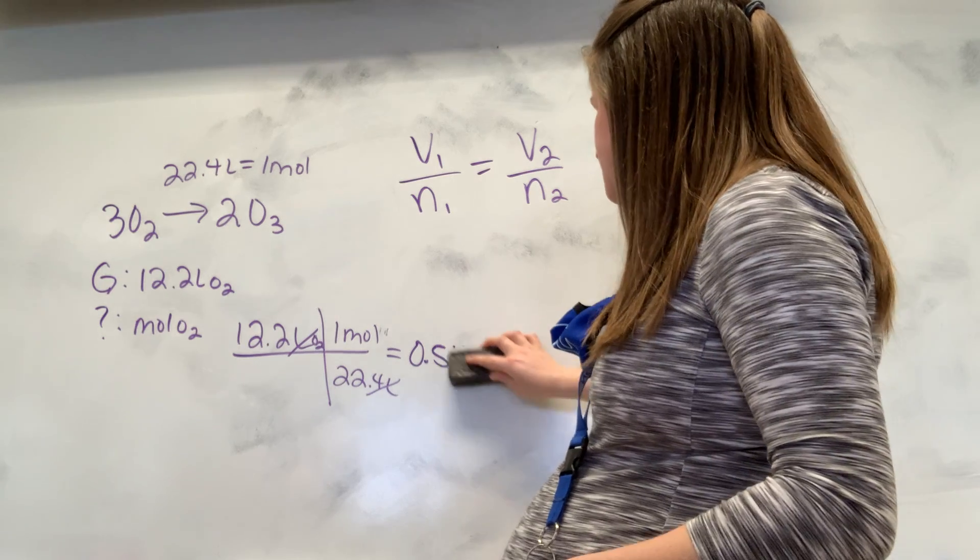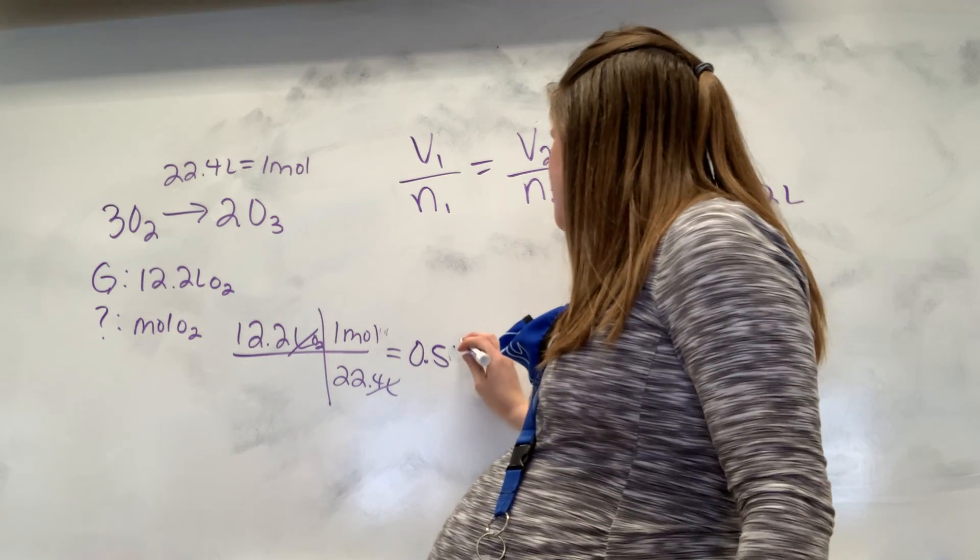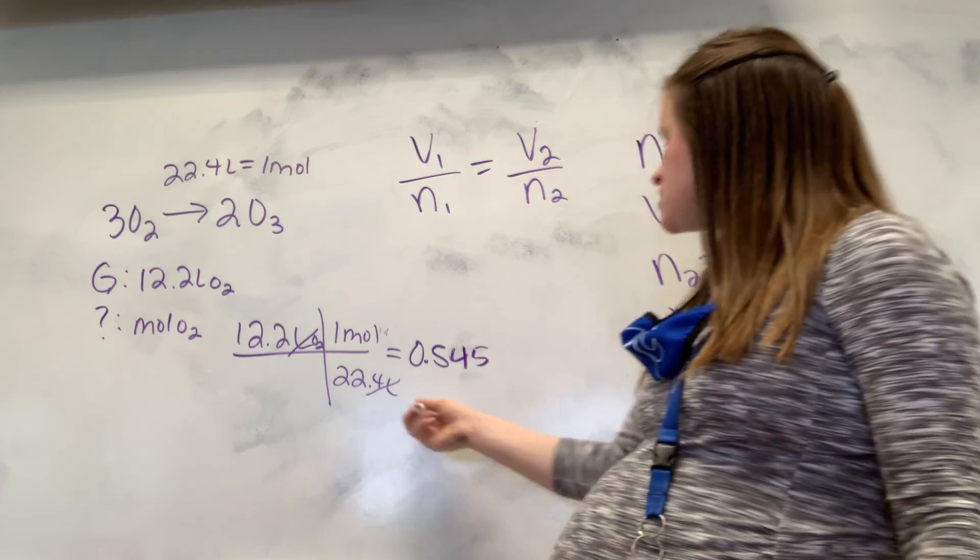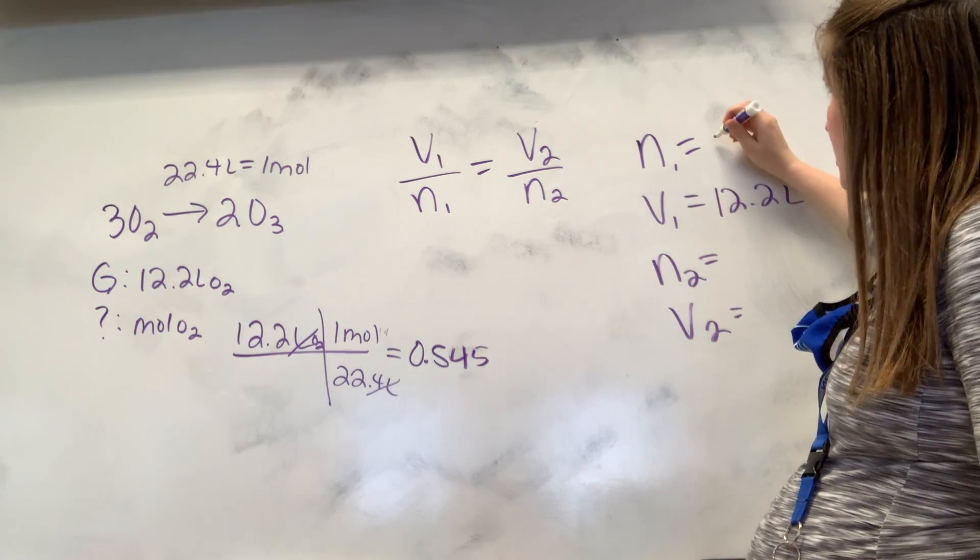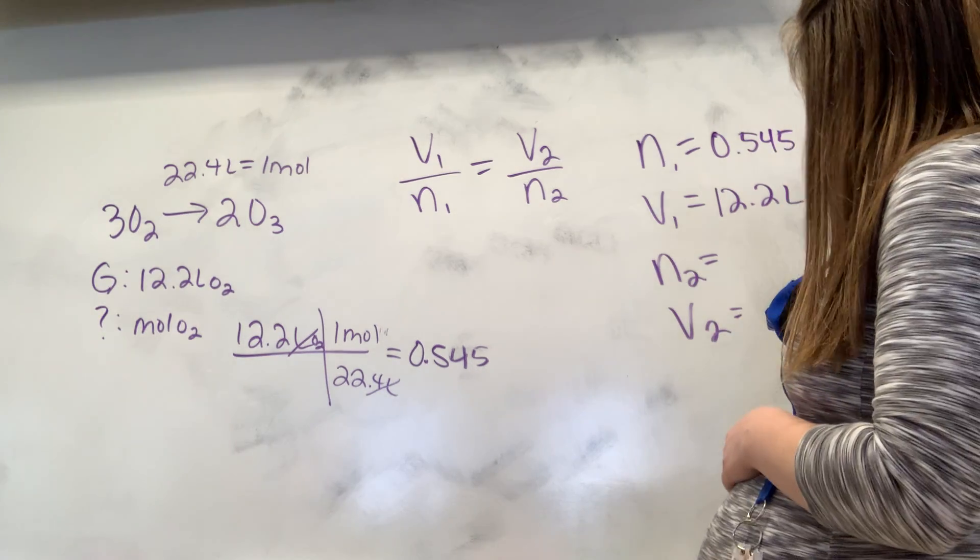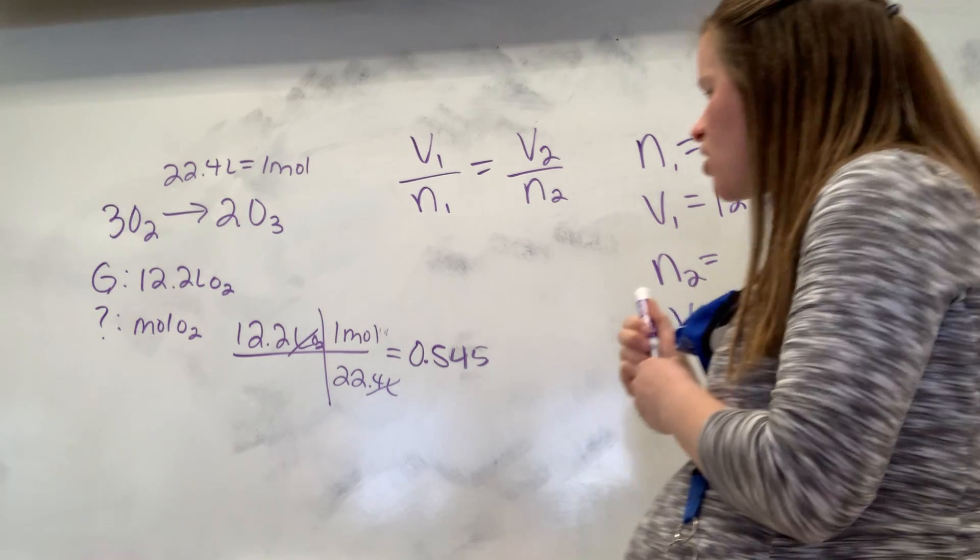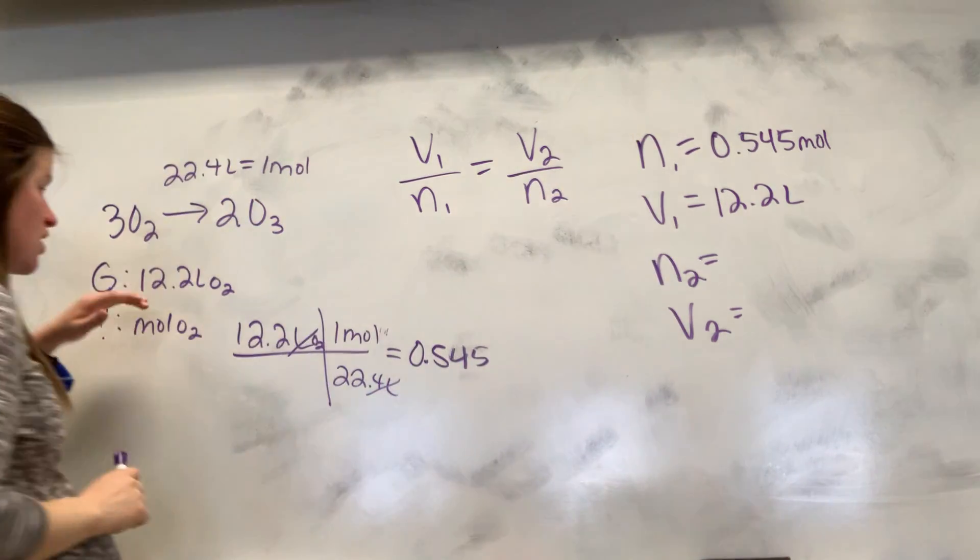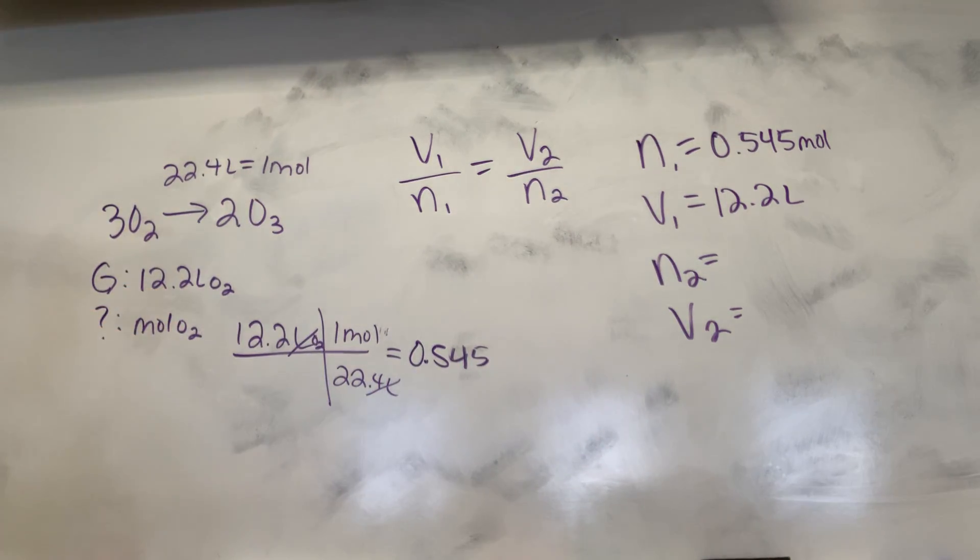22.4 equals 5.45. It's almost half. 5.45. So that's my moles. So that's going to be my N1 right here, 0.545. Because I solve for moles of O2. So this is volume of O2, moles of O2. Volume of O2, I solve for moles of O2. Great.